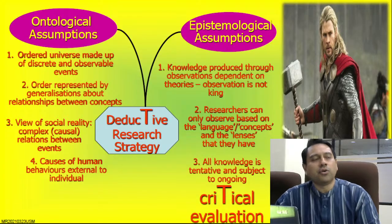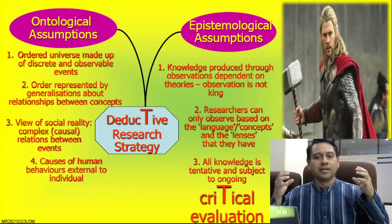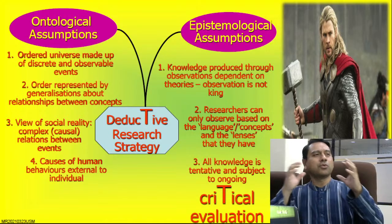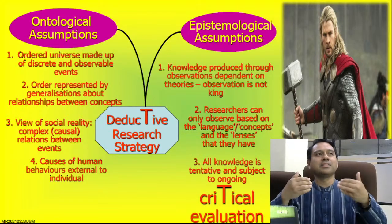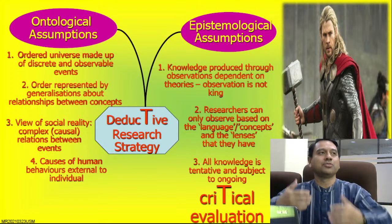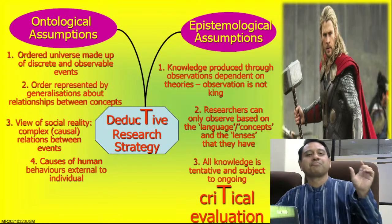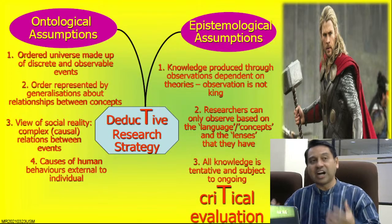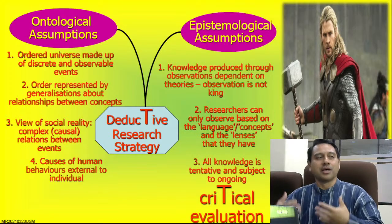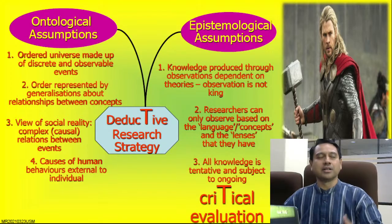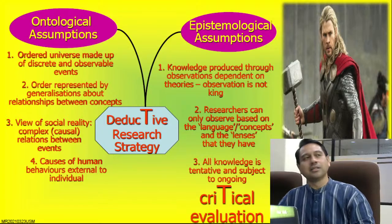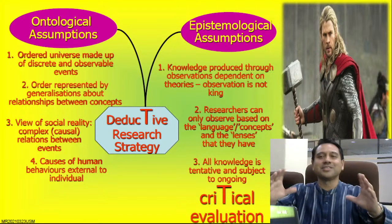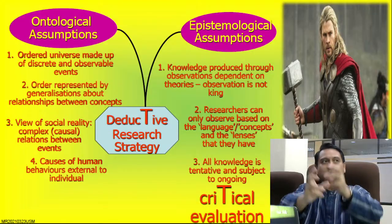If you only have the colours blue and green in mind, you cannot see the colour in between — turquoise — because your lens is limited, your language is limited. If you do not have the concept of photosynthesis — the scientific concept of how plants absorb energy and release carbon dioxide into oxygen — if you do not have that model, you cannot see photosynthesis.